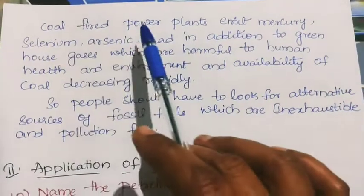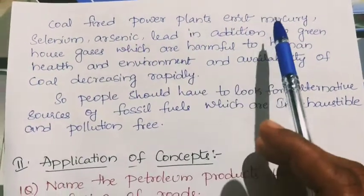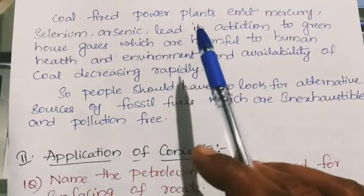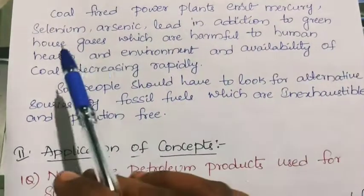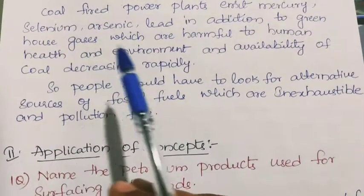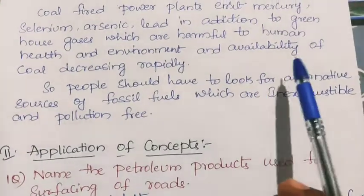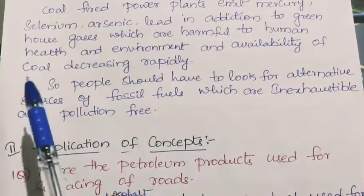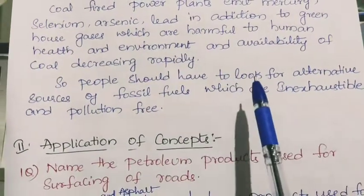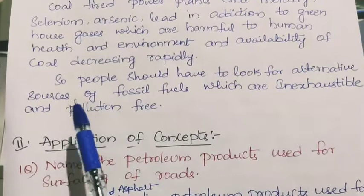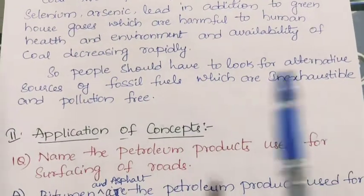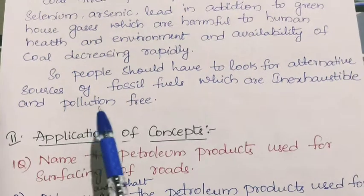Coal-fired power plants emit mercury, selenium, arsenic, and lead in addition to greenhouse gases, which are harmful to human health and the environment. The availability of coal is decreasing rapidly. So people should look for alternative sources of fossil fuels which are inexhaustible and pollution free.